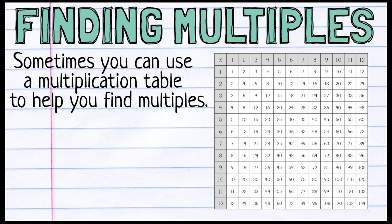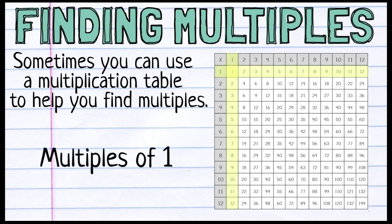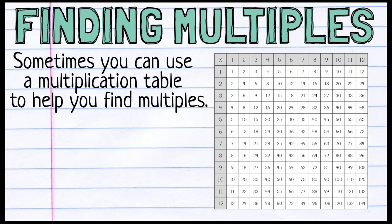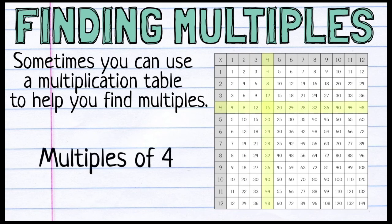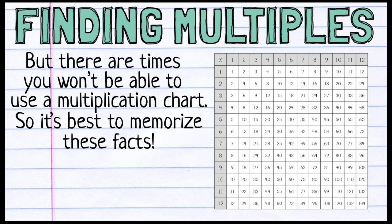Sometimes you can use a multiplication table or a multiplication chart to help you find multiples. So the multiples are actually on here twice. You can see here highlighted the multiples of 1. They go over and also up and down. So they're in rows and columns. Those are multiples of 1, multiples of 2, multiples of 3, multiples of 4, multiples of 5, multiples of 6, multiples of 7. You get the idea. But there are times that you won't be able to use a multiplication chart, possibly even on a test. So remember, it's best to memorize these facts.